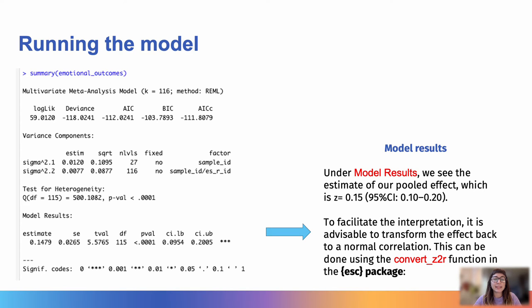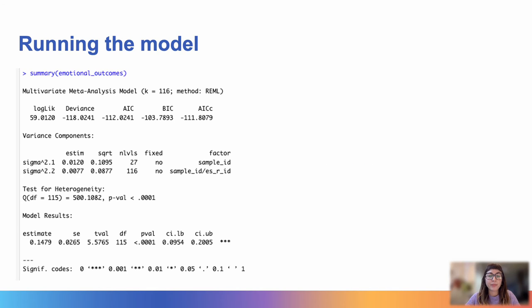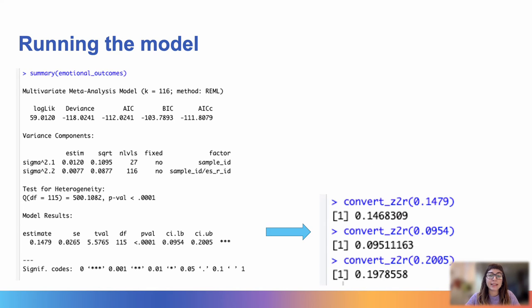To facilitate the interpretation of the results, we can transform the effect back to a normal Pearson's R correlation coefficient, and to do this, we can use the ESC package. And this is the bit of code that we need, so we convert Z to R, and here are the results.